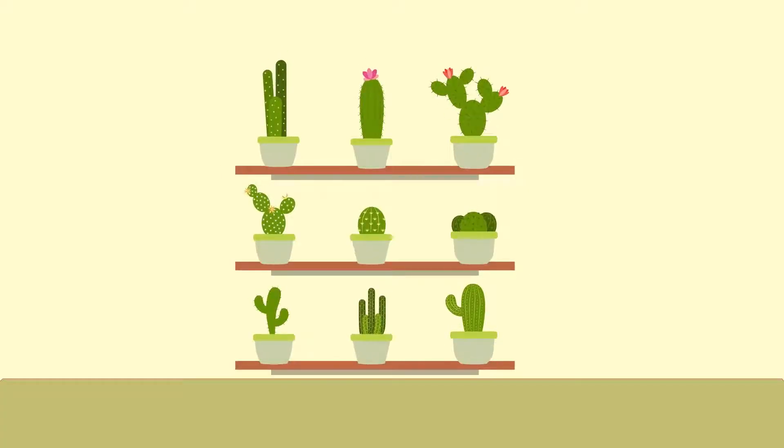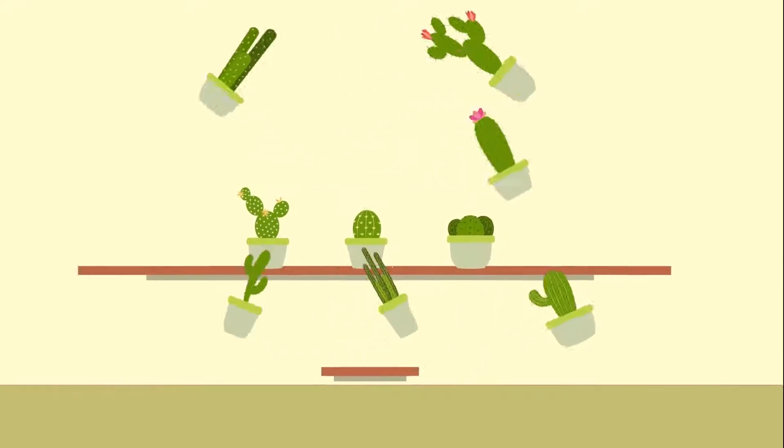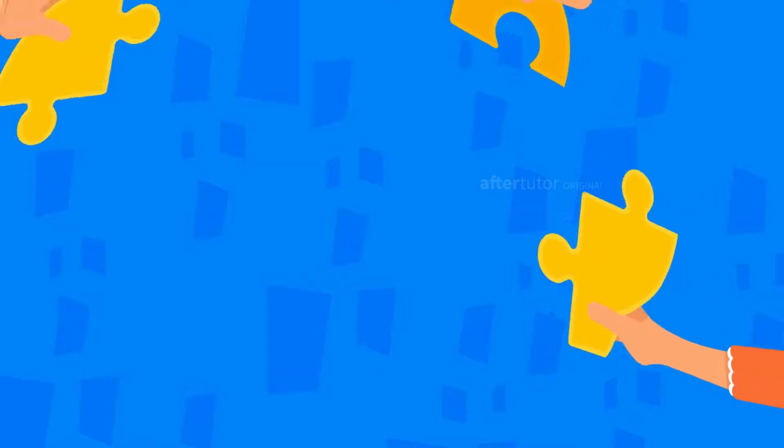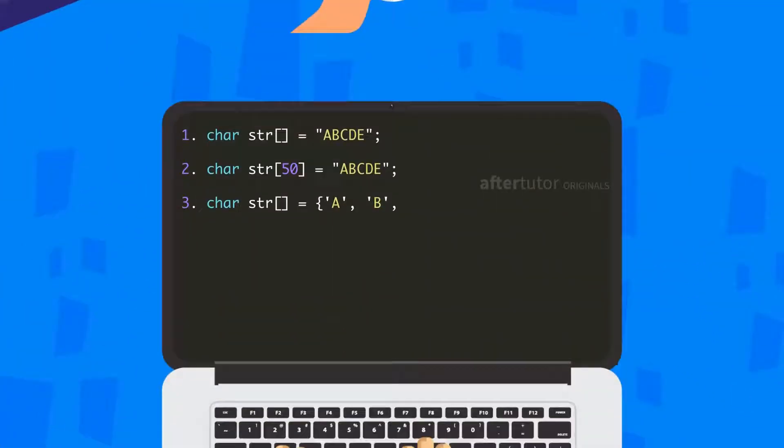Declaring a string is as simple as declaring a one-dimensional array. A string can be initialized in different number of ways as mentioned below.